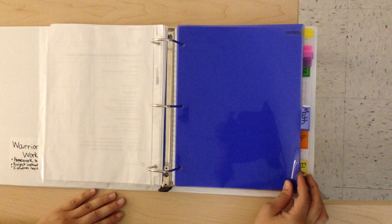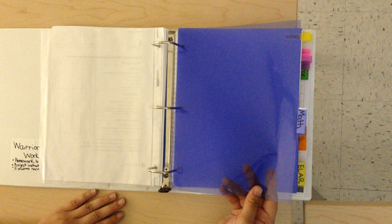Next is the math section. The entire math section is blue. You will have a blue plastic divider. It will need to be labeled math. Behind that, you will have a blue piece of cardstock. It will need to be labeled notes.